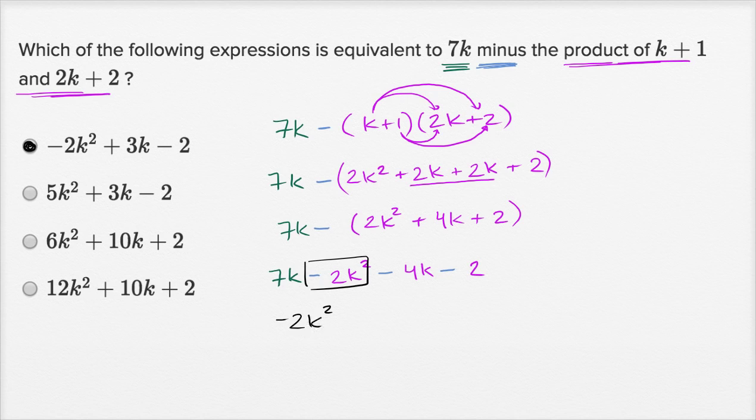So it's negative 2k squared, and then we could add 7k and negative 4k. Those two are going to add to be 3k, so it's going to be plus 3k, which is what we see right over there. And then finally you have this minus 2, which is exactly what we see in this first choice up here.